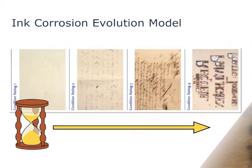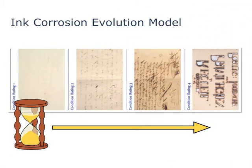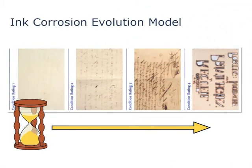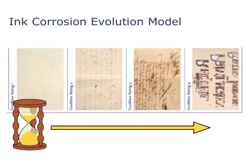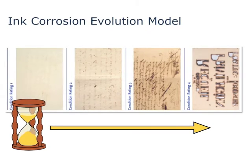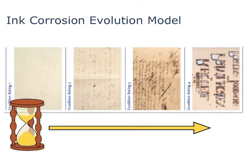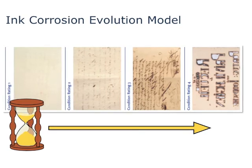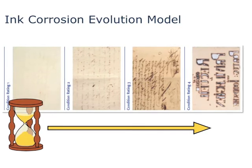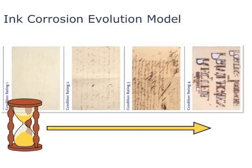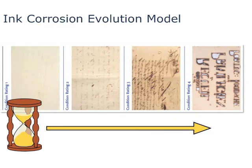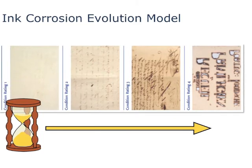In severe cases, these changes lead to a loss of value. The current model of ink corrosion assumes that all objects will follow a similar decay sequence — meaning that all cultural heritage written or drawn with iron gall ink will finally show severe decay.